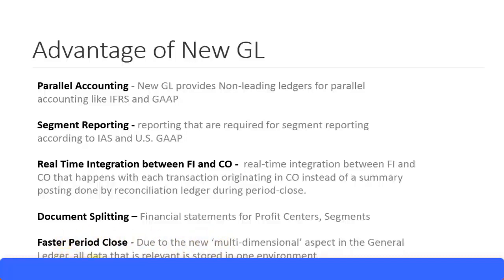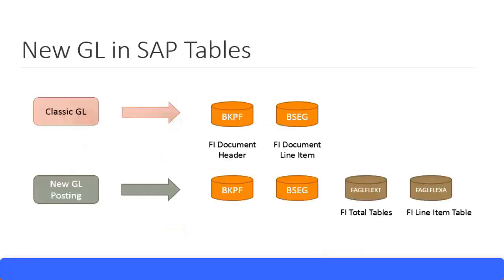Now let's look at how NewGL posts to the SAP tables. Previously with classic GL, you had two tables: BKPF and BSEG. BKPF is the FI document header table, which contains the document date, posting date, reference, document type, period, fiscal year, and so on. BSEG is the document line item table, which contains the posting key.